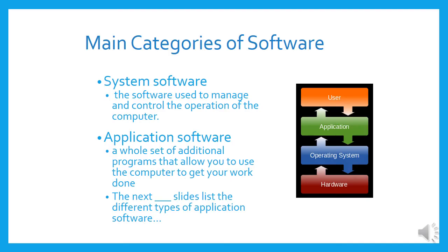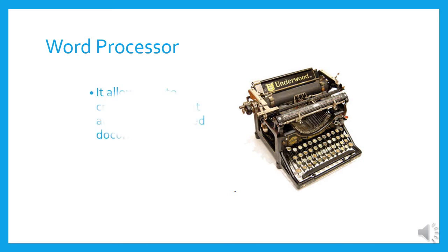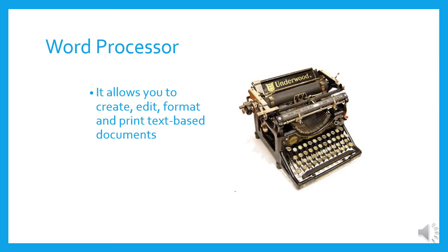The next few slides list the different types of application software. In the old days, if people wanted to write a letter they used a typewriter. These days we use a word processor, and the most common word processor you know of is Word. It allows you to create, edit, format, and print text-based documents.